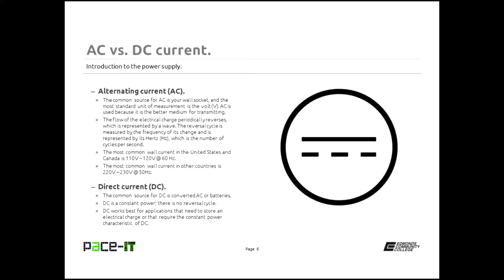DC, on the other hand, stands for direct current. The common source for DC is converted AC power or batteries. DC is a constant power — there is no reversal cycle. DC works best for applications that need to store an electrical charge or that require constant power characteristics. Electronics are an application that really does require the constant power characteristics of DC.